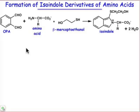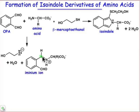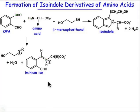Basically what's involved here is that we start with OPA and an amino acid in the presence of mercaptoethanol. The beginning of the reaction involves the formation of an aminium ion — that is, a nitrogen that's a primary amine reacts with an aldehyde in a condensation reaction, and the aminium ion is formed. We've discussed this already in the course, so I won't go through that in any detail.